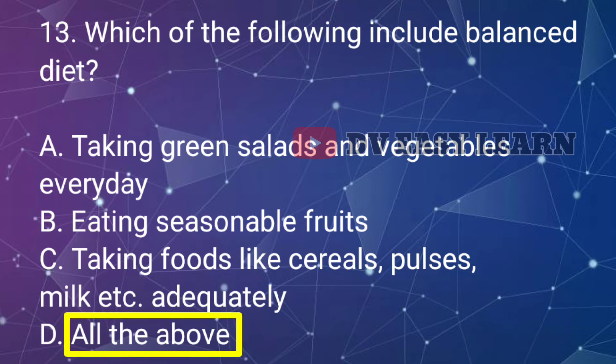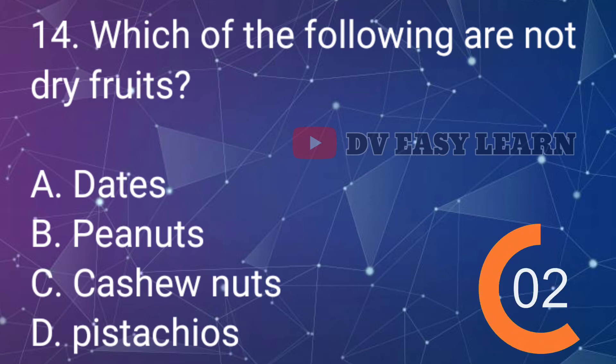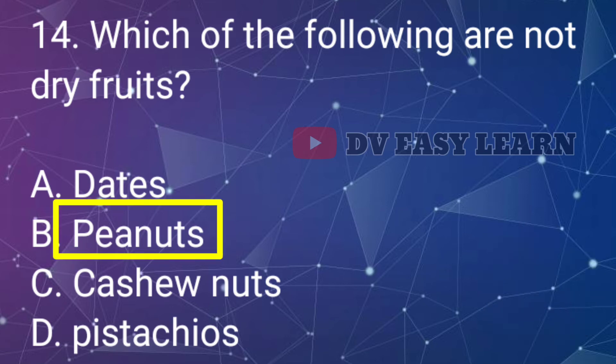Question No. 14: Taking green salads and vegetables every day. Question No. 15: Eating seasonal fruits. Question No. 16: Taking foods like cereals, pulses, milk etc. adequately. Question No. 15: Which of the following are not dry fruits — Correct answer: Peanuts.